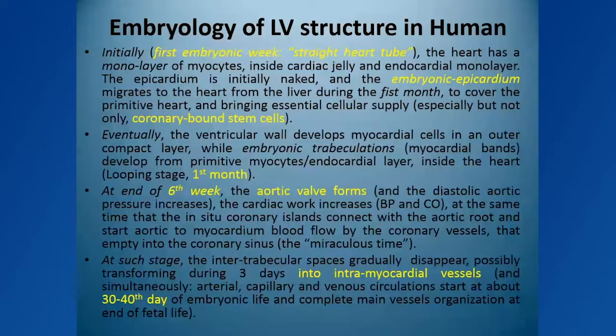At the end of the sixth week, the most critical embryonic event occurs: the appearance of the aortic valve. The separation of the common truncus into two arteries — the aorta and pulmonary artery — leads to aortic valve formation. The aortic valve is essential for proper coronary circulation because it creates high diastolic pressure. Before this, the pressure in the ventricle equals aortic pressure with no separation between aorta and left ventricle.